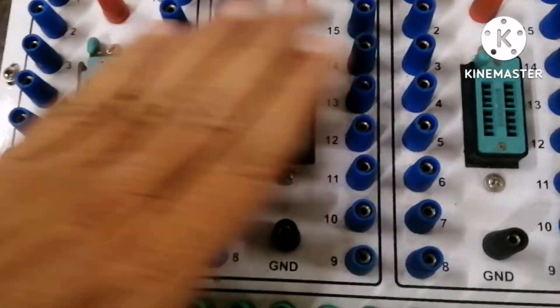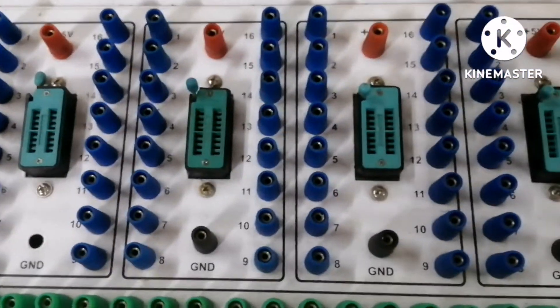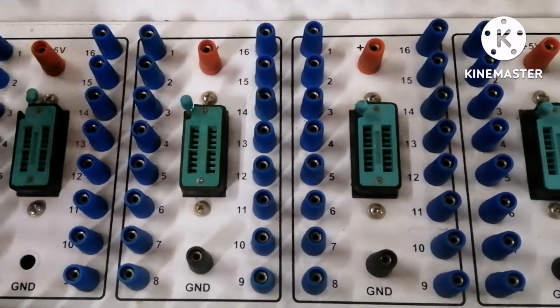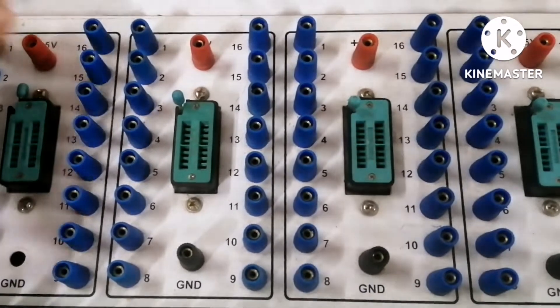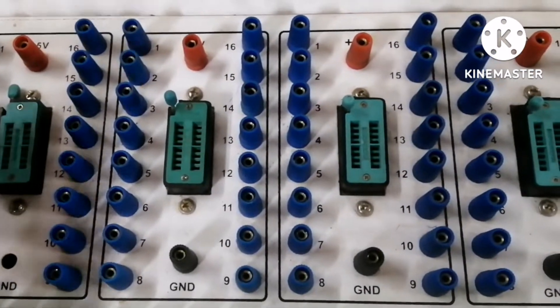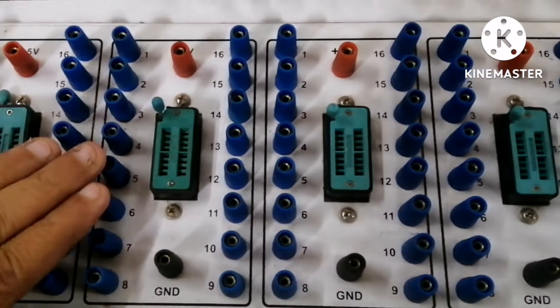So these are the 16-pin zigs. Usually, what we are using, AND, OR, NOT, XOR gates, have only 14 pins. So no problem using these four zigs. At that time, four ICs can be checked simultaneously.